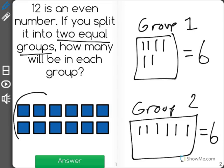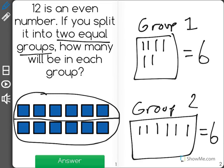And just like this picture shows, 12 split into two rows. When we take 12 and split it into two groups, there will be 6 in each group.